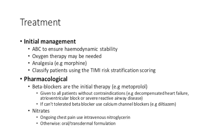From a pharmacological point of view, beta blockers are the initial therapy. These include metoprolol or atenolol and are given to all patients without contraindication — so not in patients with decompensated heart failure, AV block, or severe reactive airway disease. If patients can't tolerate beta blockers, they can be given a cardioselective calcium channel blocker such as diltiazem. Nitrates are also very important and are useful in patients who still have ongoing chest pain.